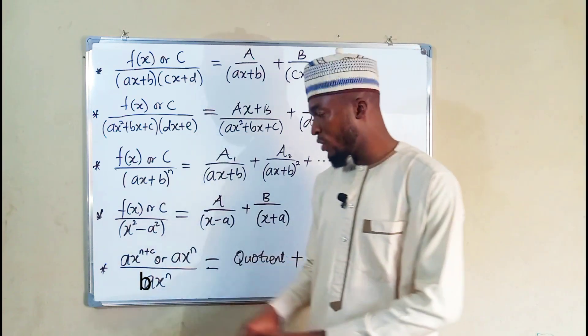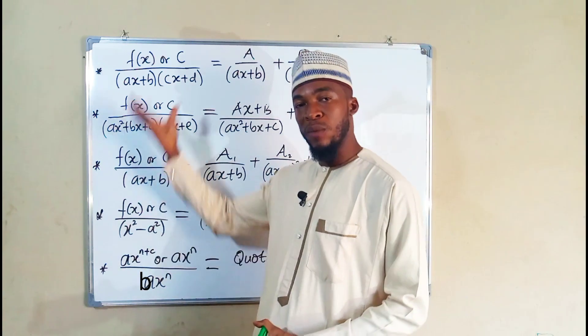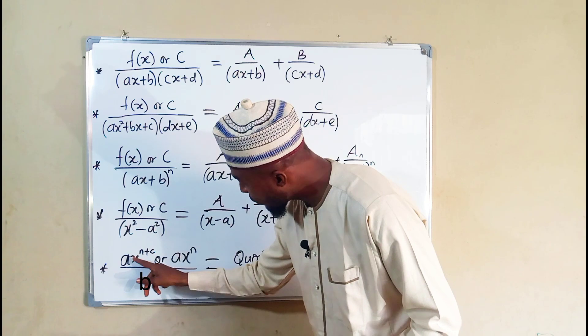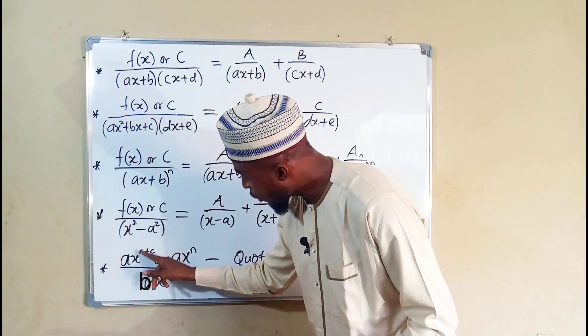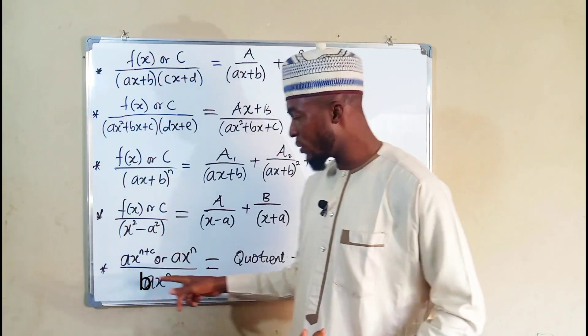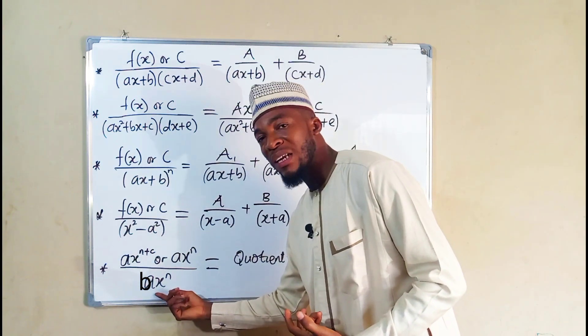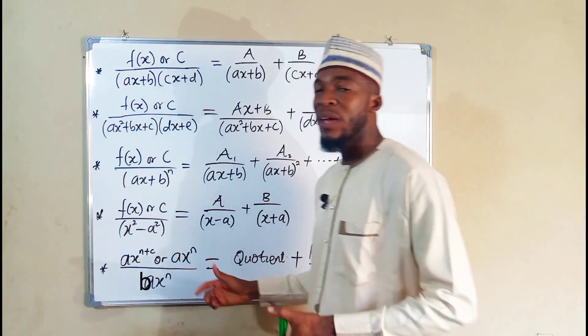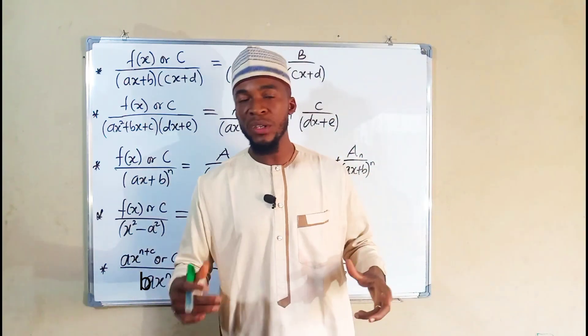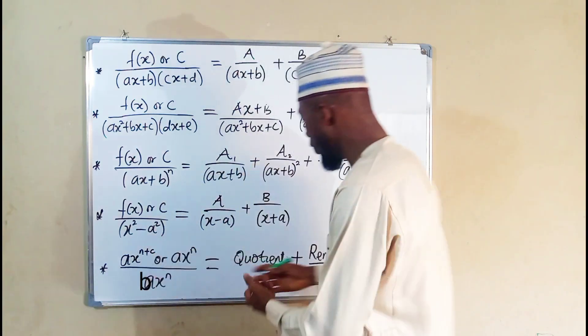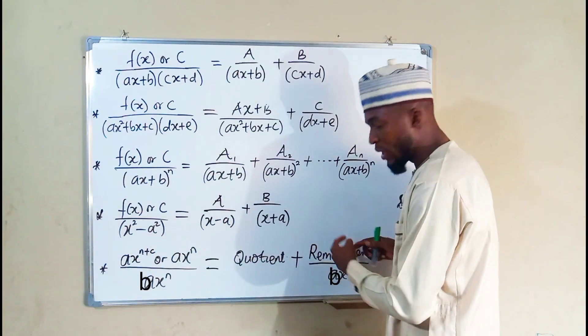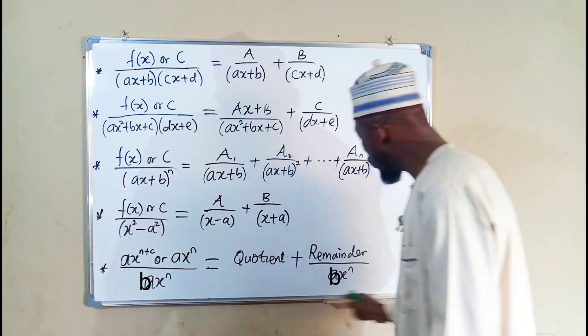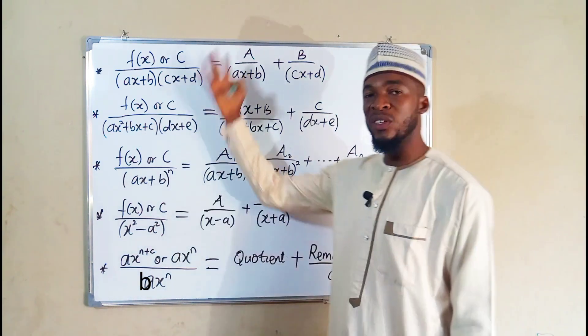And the last one which I want to display for today is when we have the degree of the top greater than or equal to the degree of the bottom. You can see here we have a function to the power of n plus c, where c is any constant. Definitely it is going to be greater than this denominator, or sometimes they may appear to be the same. In that case we have to carry out long division. After carrying out long division, we take the quotient, we add it to the remainder divided by the factor we have. And this is what we have to split into partial fractions, applying these principles.